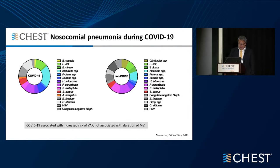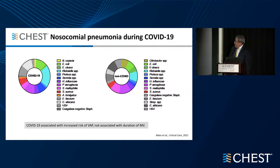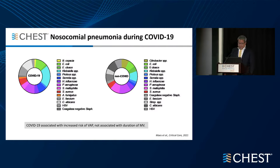Earlier studies also suggested that COVID-19 was associated with increased risk of VAP despite not being associated with the duration of mechanical ventilation. Here you can see the different kinds of organisms detected — the more common organisms associated with hospital-acquired pneumonia and VAP, including pseudomonas, Klebsiella, and Staph aureus.